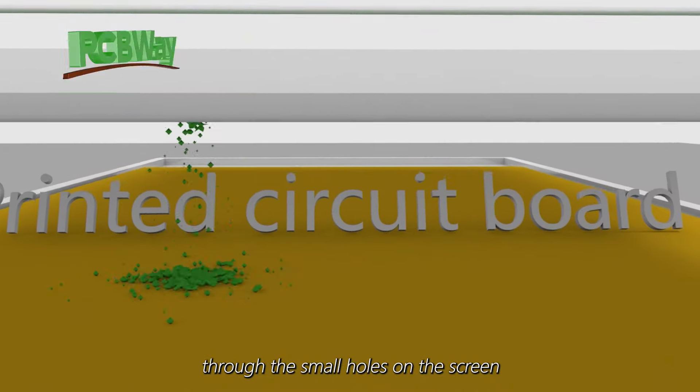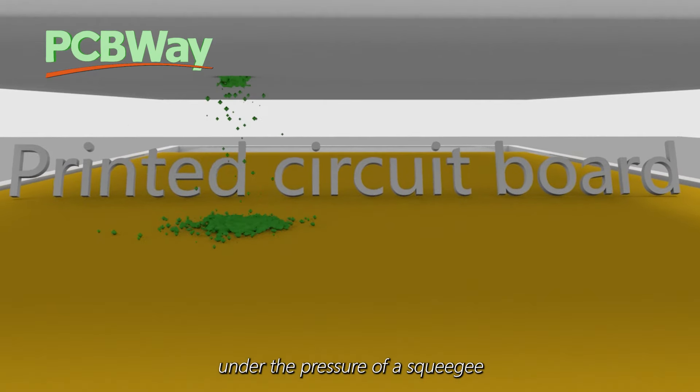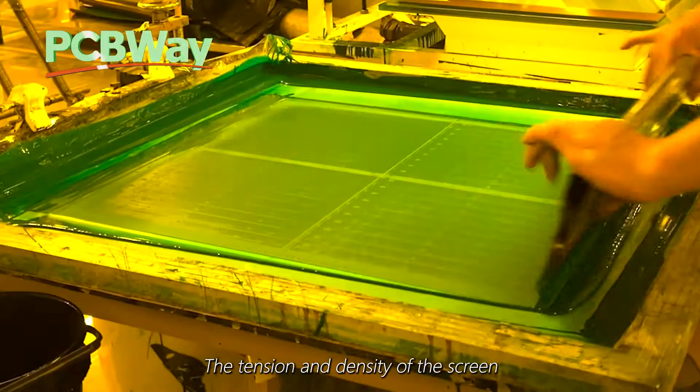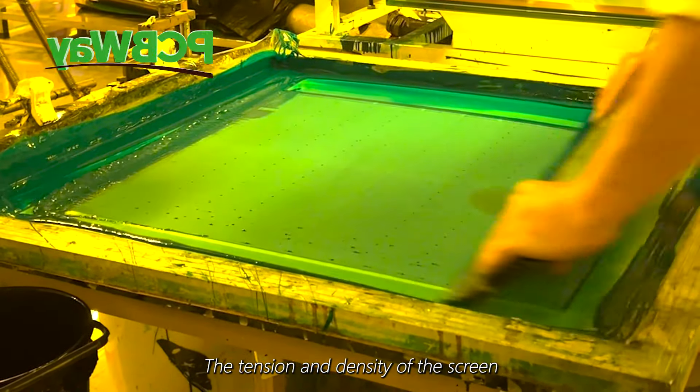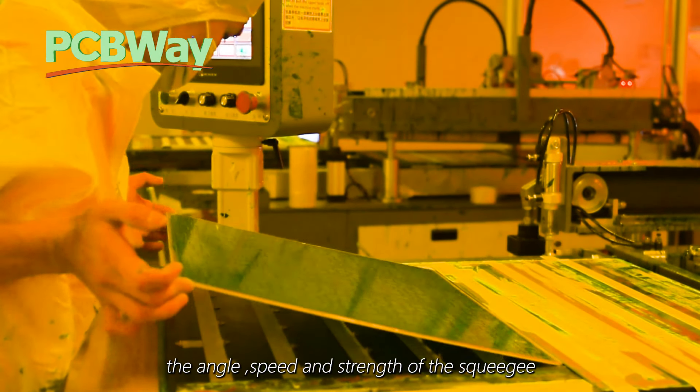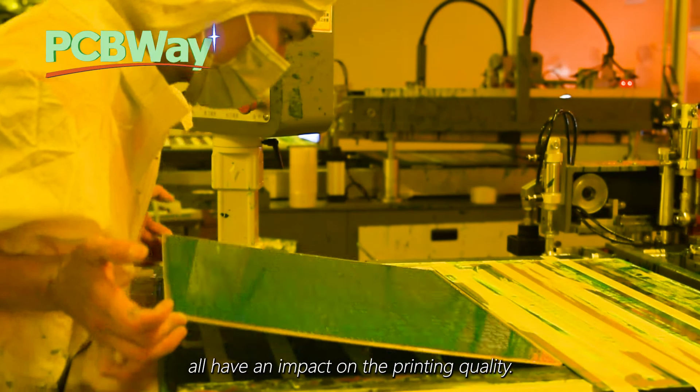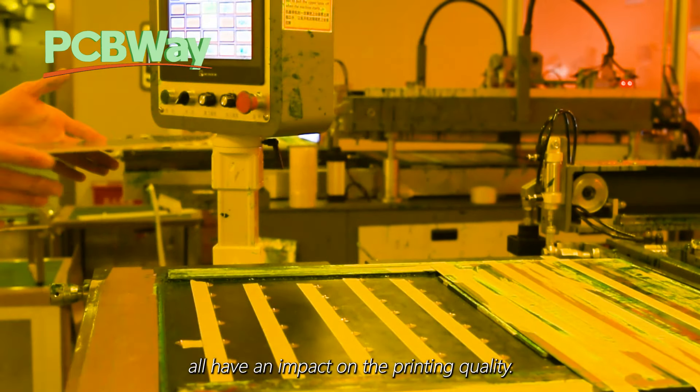Through the small holes on the screen under the pressure of a squeegee, the tension and density of the screen, the angle, speed, and strength of the squeegee all have an impact on the printing quality.